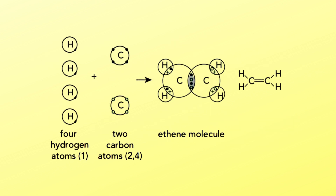Another example is ethene. There is a double bond between the two carbon atoms, meaning four electrons are shared. There is also a single bond between each carbon and hydrogen, where one pair of electrons is shared between carbon and hydrogen.